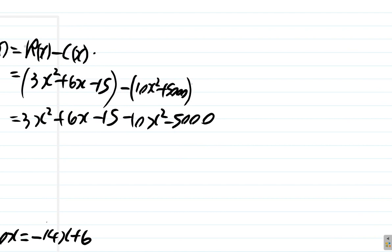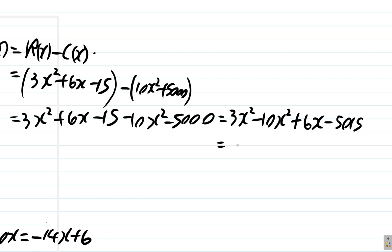Let's see what we have. Combining like terms: 3x squared minus 10x squared gives negative 7x squared, plus 6x, and minus 15 minus 5000 gives minus 5015. So the total profit P(x) is negative 7x squared plus 6x minus 5015.